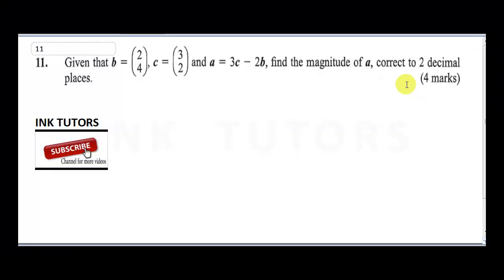Okay, question 11 is a vectors question. If you've not hit the subscribe button, please do. Now, question 11 says: given that b is the vector (2, 4) and c is (3, 2), and a is equal to 3c minus 2b, find the magnitude of a.